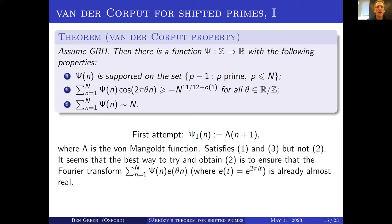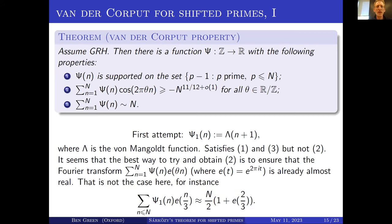The best way to try and obtain the second property is to first ensure that the Fourier transform is at least almost real, rather than trying to get a real and positive part. That's definitely not the case for the von Mangoldt weight. For example, if I take the Fourier transform at 1/3, it will already be an imaginary number: n/2 times (1 + e(2/3)).